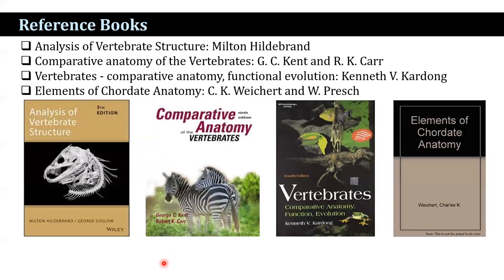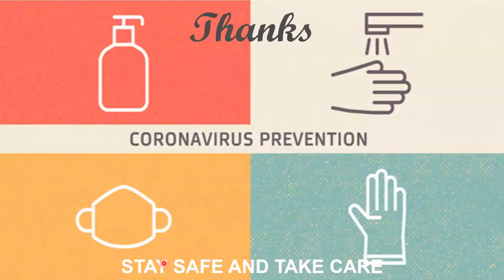Reference books for this topic include Analysis of Vertebrate Structure by Hildebrand, Comparative Anatomy of the Vertebrates by Kent and Carr, Vertebrates: Comparative Anatomy, Function, and Evolution by Kardong, and Elements of Chordate Anatomy by Weichert. Thank you everybody.